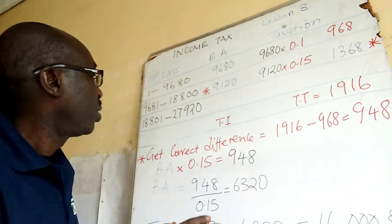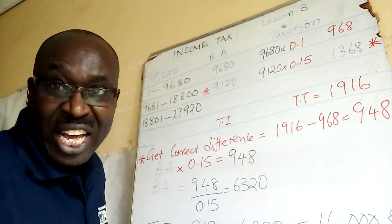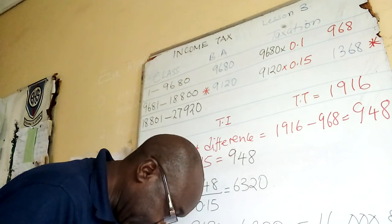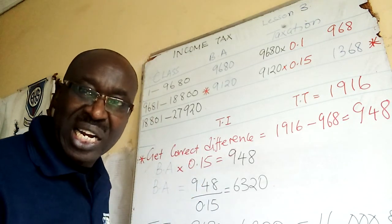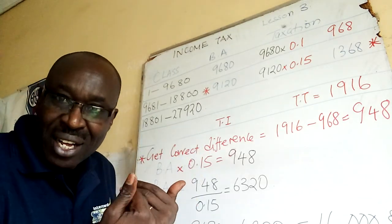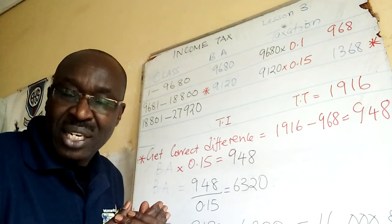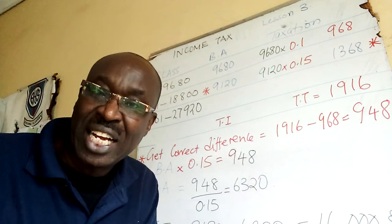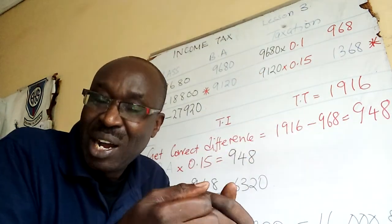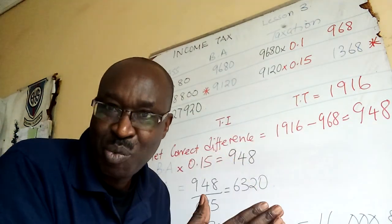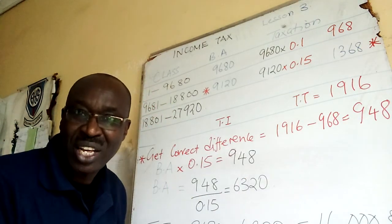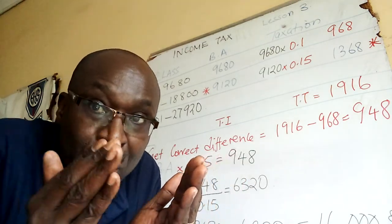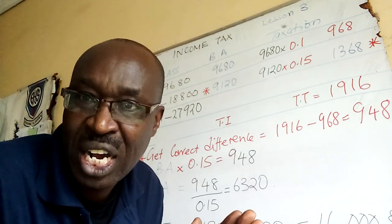The table has only three classes, so it is very simple. From the table, the first class is: under 9,681 — meaning from 9,680 downward. The lower limit is one, because we don't tax anyone who has nothing. So Class 1 goes from 1 up to 9,680.